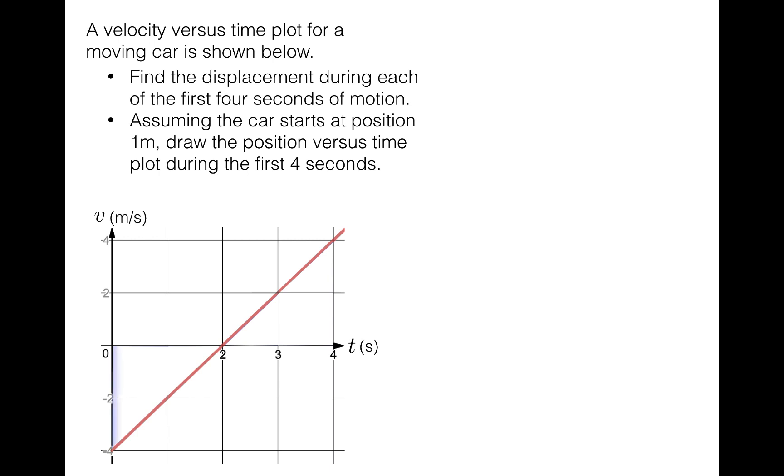During the first second, the area under the curve is here. Notice that one unit of the grid has side lengths one second and two meters per second. So the area of one grid unit is two meters. The area under the curve during that first second is below the x-axis, so it's going to be negative. It contains one and a half of those units, so the area is negative three meters. Between one and two seconds, the area is here, and that area is negative one meter.